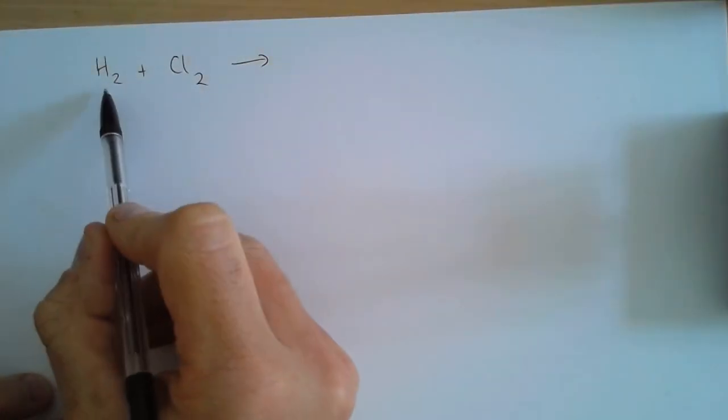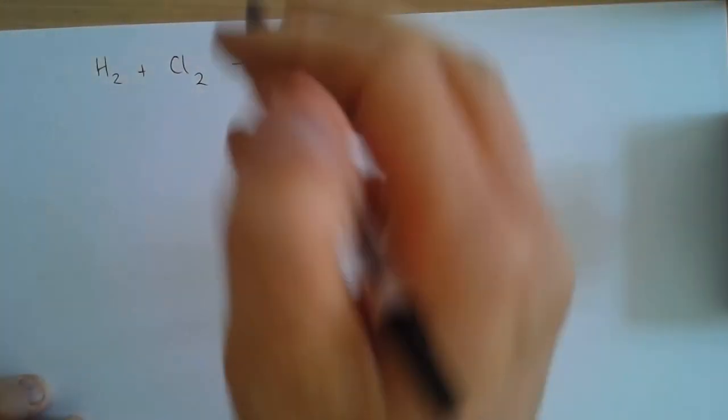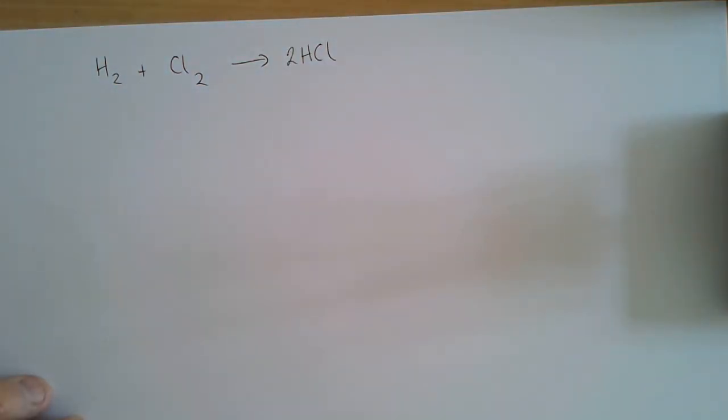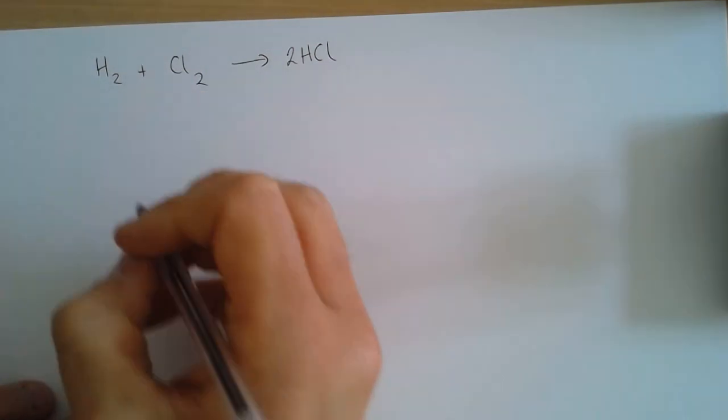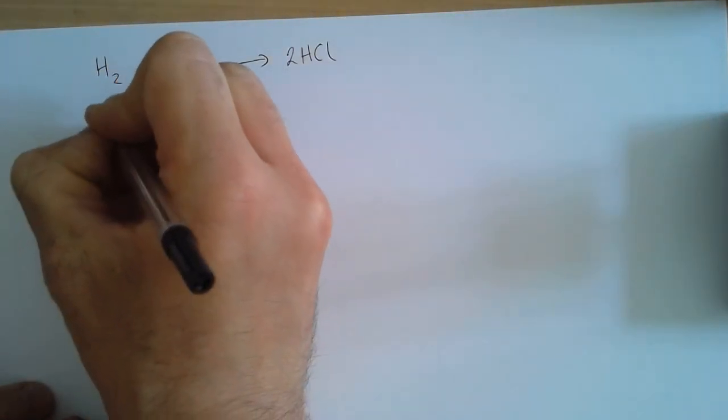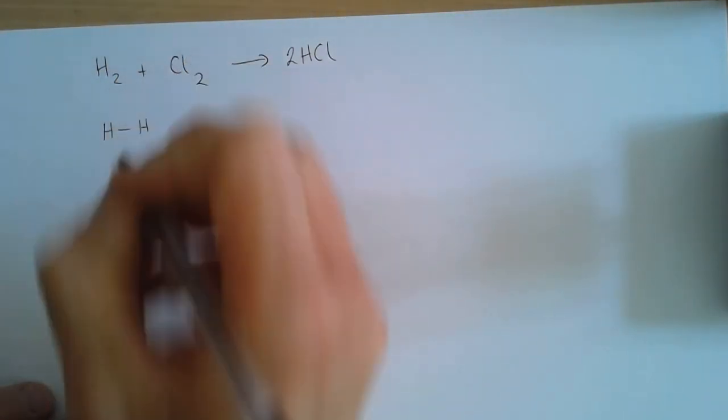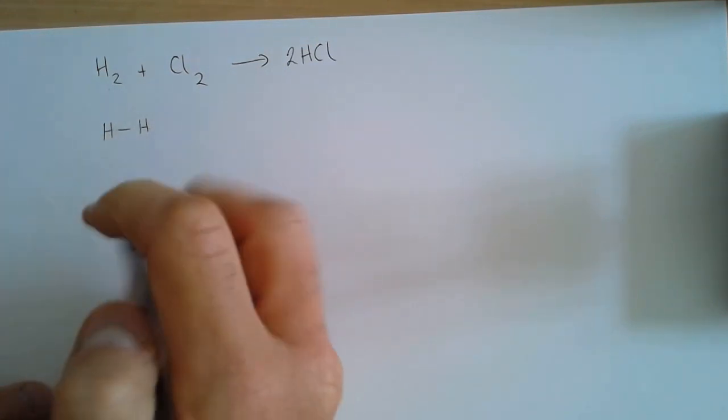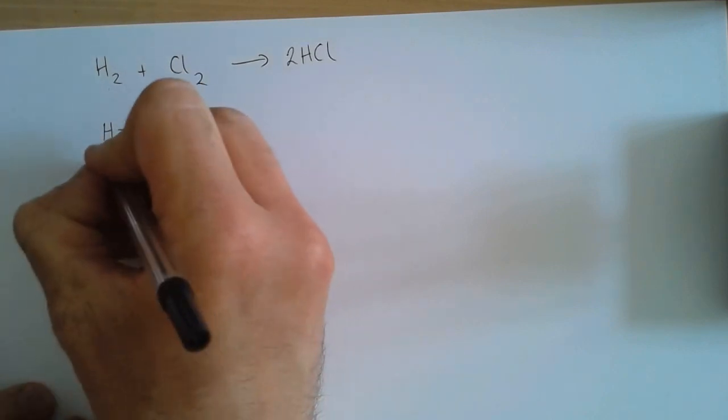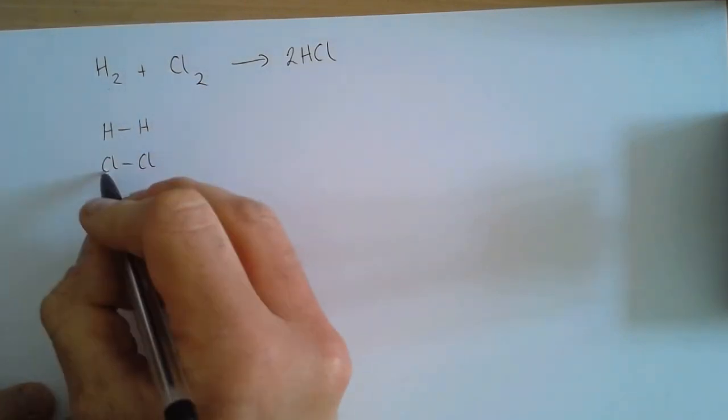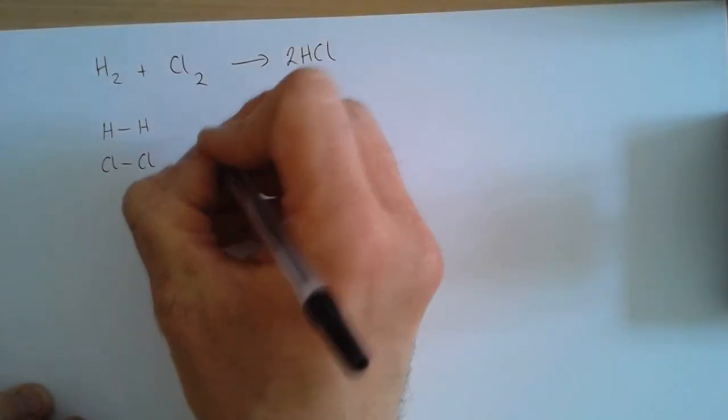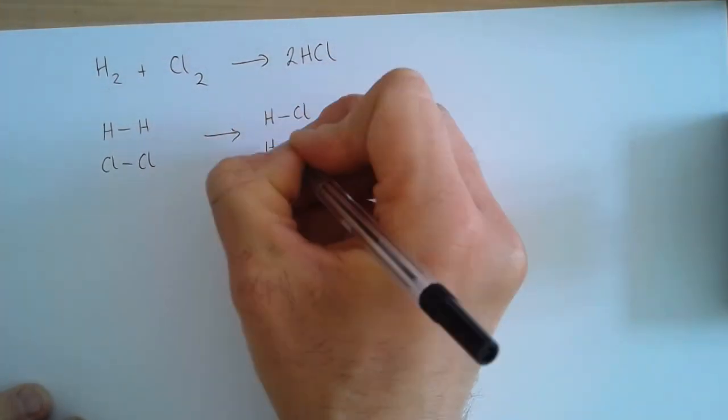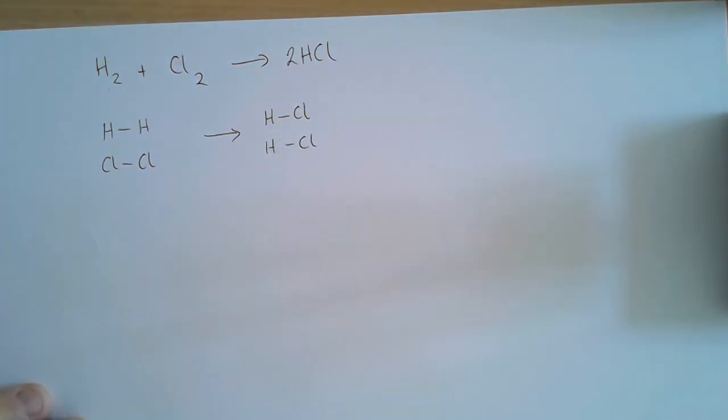So a straightforward reaction is the reaction between a hydrogen molecule and a chlorine molecule to make two hydrogen chloride molecules. Now if we were to write these out in terms of their bonds, we would see that we've got a hydrogen atom bonded to hydrogen atom, so this line here represents a covalent bond, and then chlorine bonded to a chlorine here.